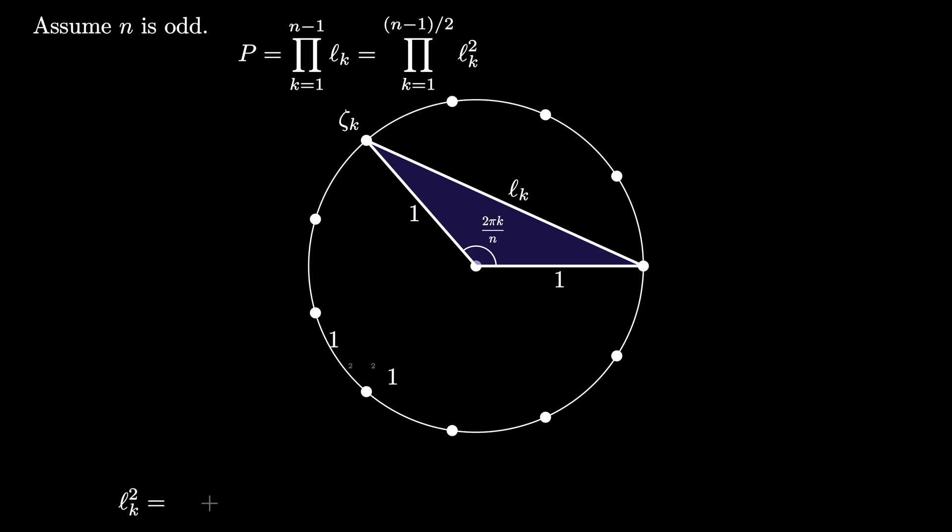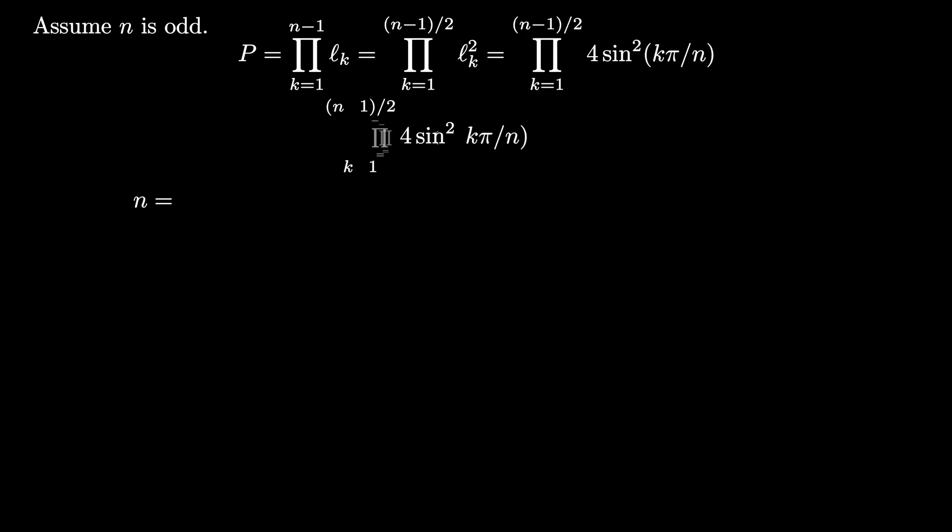...we have that lₖ² is given by 1² + 1² - 2(1)(1)cos(2kπ/n), which simplifies to 2 - 2cos(2π/n), which can be replaced by 4sin²(kπ/n) using a trig identity. This means the product we're interested in is the product as k goes from 1 to (n-1)/2 of 4sin²(kπ/n). But our previous computation of P showed us that this product was n, so we get this interesting product.